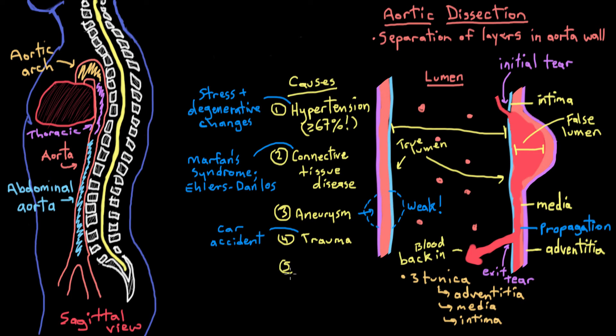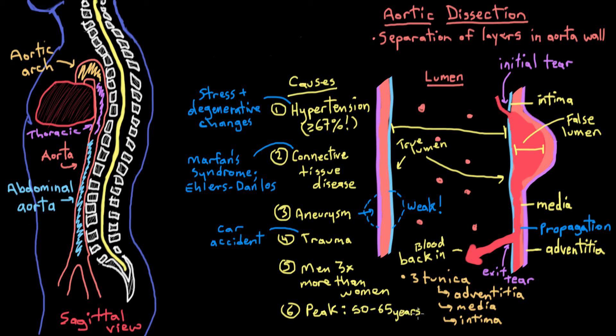Men are actually two to three times more likely than women to develop an aortic dissection. And increasing age is another risk factor — the peak incidence we see for dissection is between 50 and 65 years old, unless you have one of those underlying connective tissue disorders, in which case the peak incidence would be between about 20 to 40 years old.